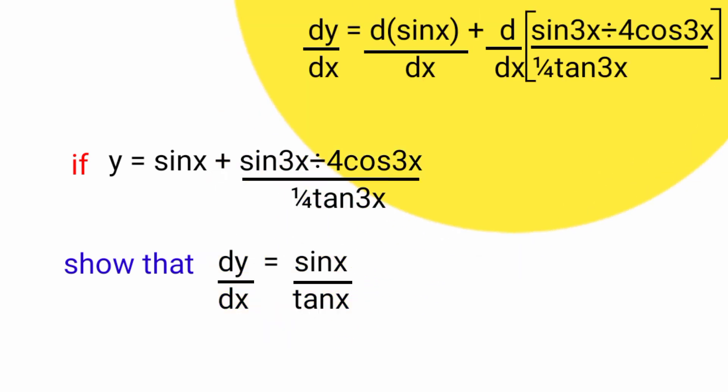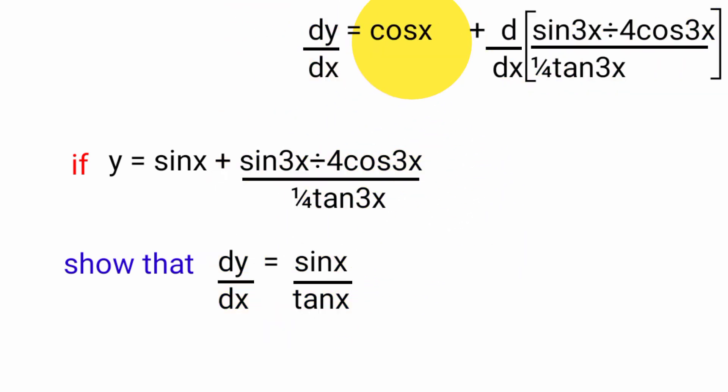Differentiating y here now, the differential of sin x with respect to x is cos x. While here, what's the differential of sin 3x divided by 4 cos 3x, all divided by 1 over 4 tan 3x?